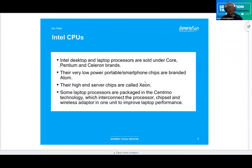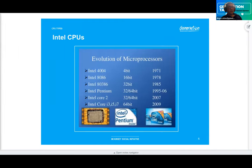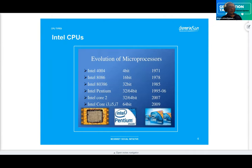The Xeon is a key note for high-end servers. The Centrino ones are the different types available. Over the years, you had the 4-bit processor. Then in the 80s came the 32-bit processors — called '86' because it came out around '85-'86, and that's why they call it 86 instead of 32.